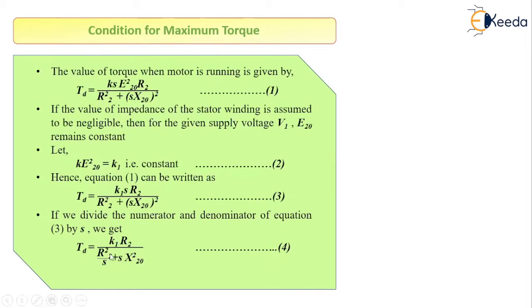Now observe the denominator of equation 4 carefully. It is very similar to the algebraic form A² + B², where A = R2/√S and B = √S · X20.